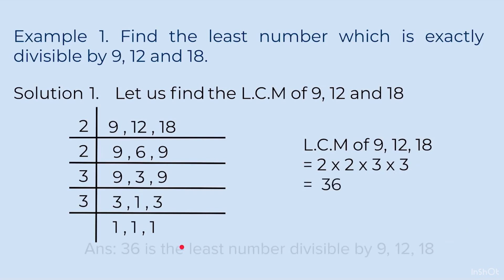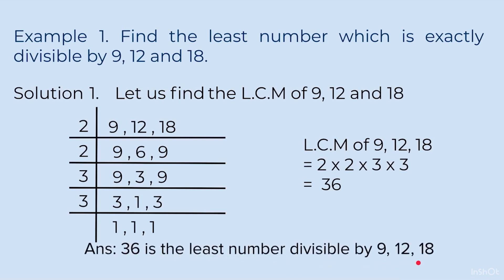So 36 is the least number divisible by 9, 12 and 18. In the table of 9, 36 will come. In the table of 12, 36 will come. And in the table of 18, 36 will come.